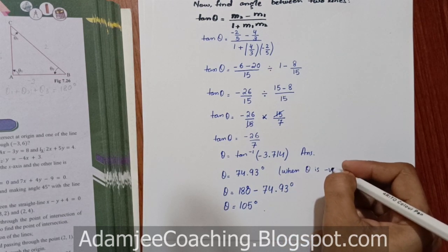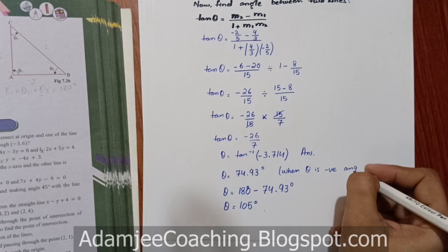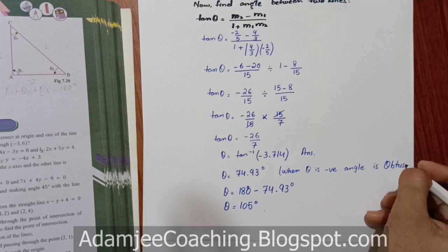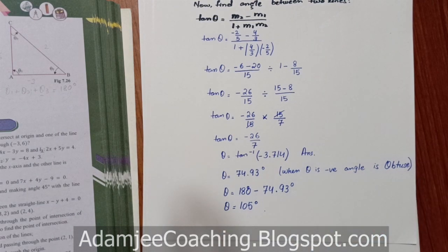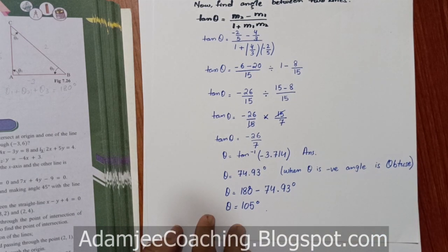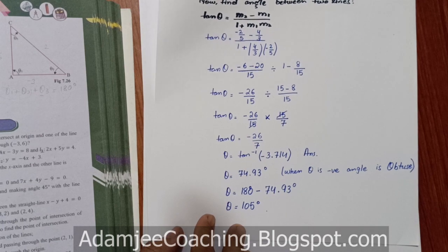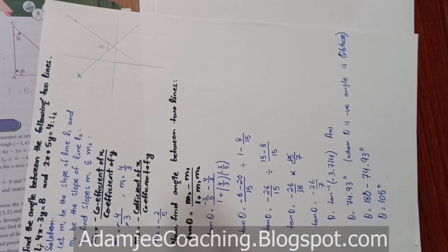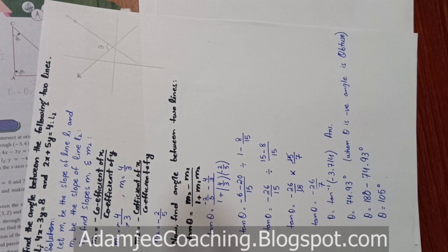When theta is negative, angle is obtuse. Yeh tha aapke paas Exercise 7.5 ka question number 2. I hope question aapko samajh mein aaya hoga. Video ko like, channel ko subscribe zaroor kijiyega. Video ko send aaye to comment section mein bhi zaroor comment kijiyega. Milte hain next video mein, next question ke saath.